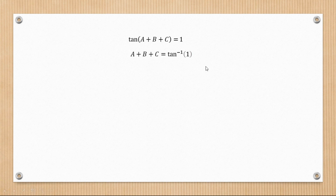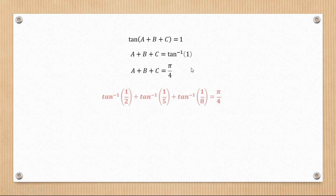We have tan of (a plus b plus c) equals one, so taking tan inverse of both sides gives a plus b plus c equals tan inverse of one, which is pi over four or 45 degrees. Substituting back the values of a, b, and c gives tan inverse of one half plus tan inverse of one over five plus tan inverse of one over eight equals pi over four, and hence we have proved the result.